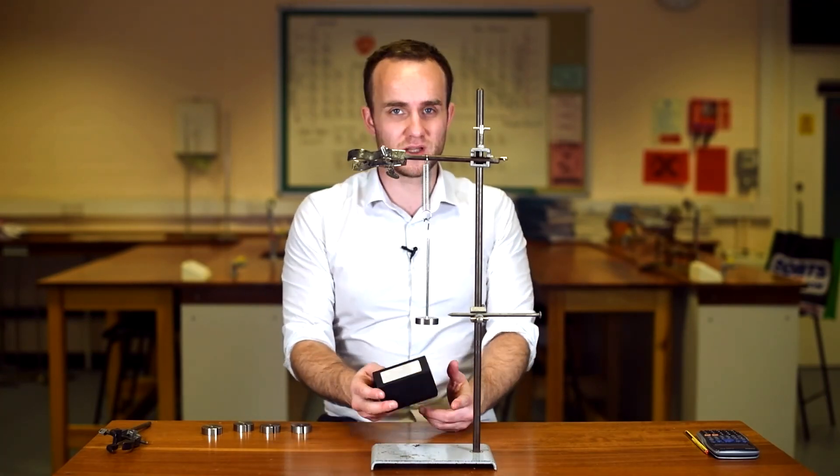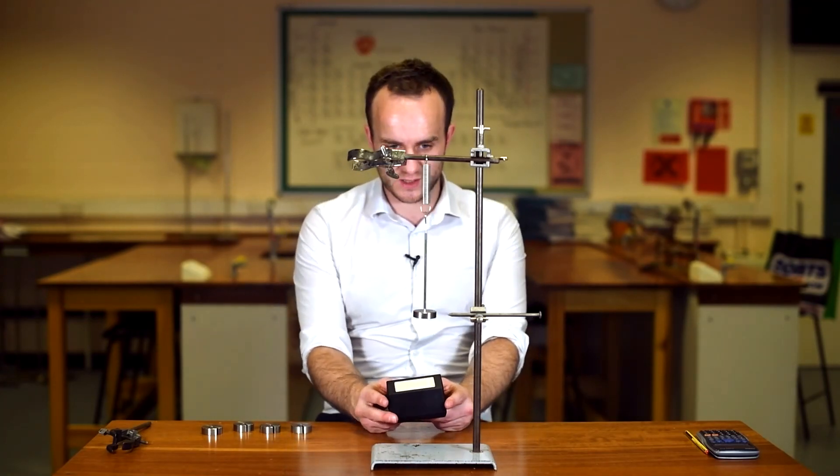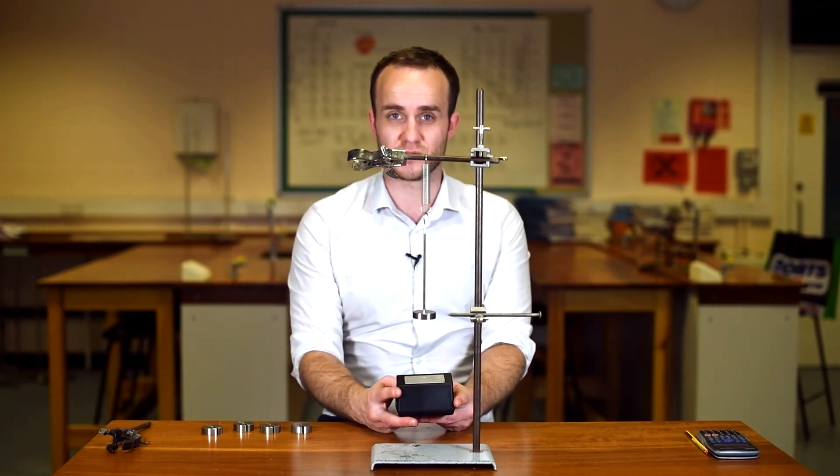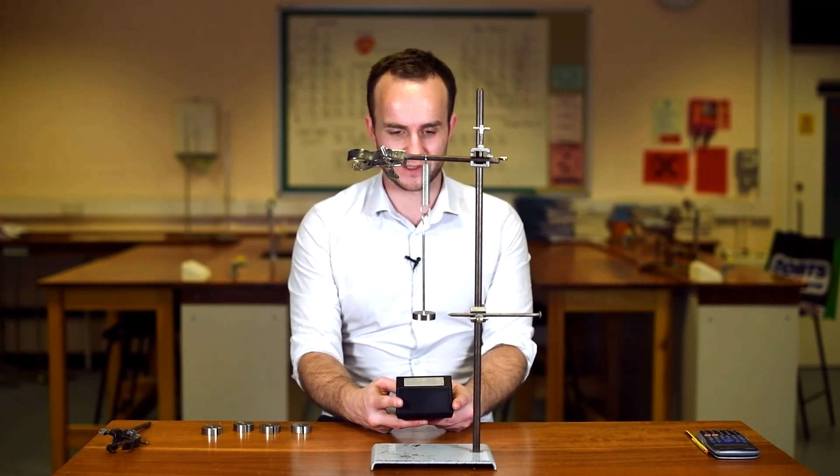Again we're going to leave it go, then we're just going to start the stopwatch when it passes the fiducial marker, then call that zero and count for 10 oscillations again.